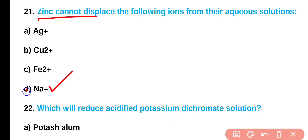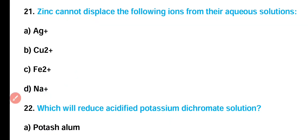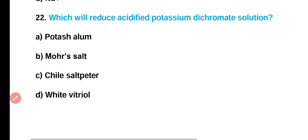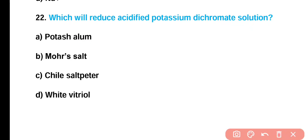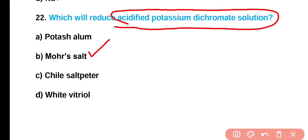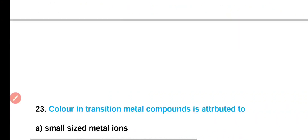Question number 22: Which will reduce acidified potassium dichromate solution — potassium, Mohr salt, child salt, or white vitriol? Correct answer is option B. Mohr salt can reduce acidified potassium dichromate solution.